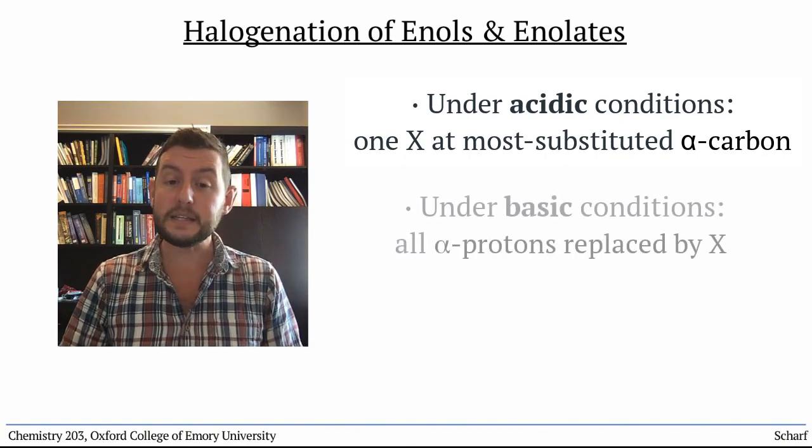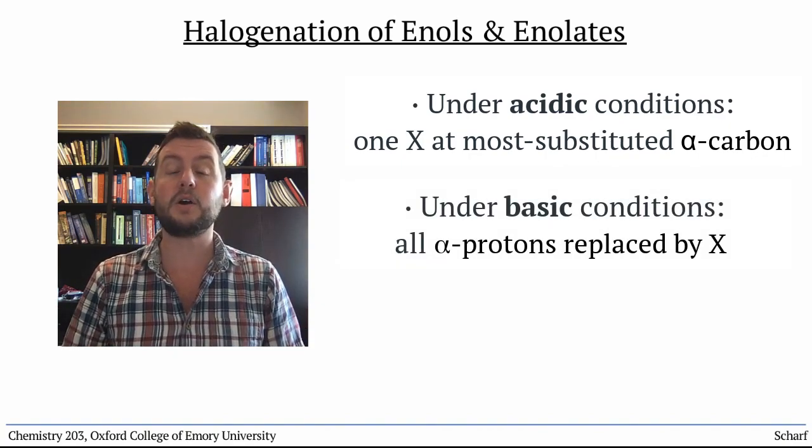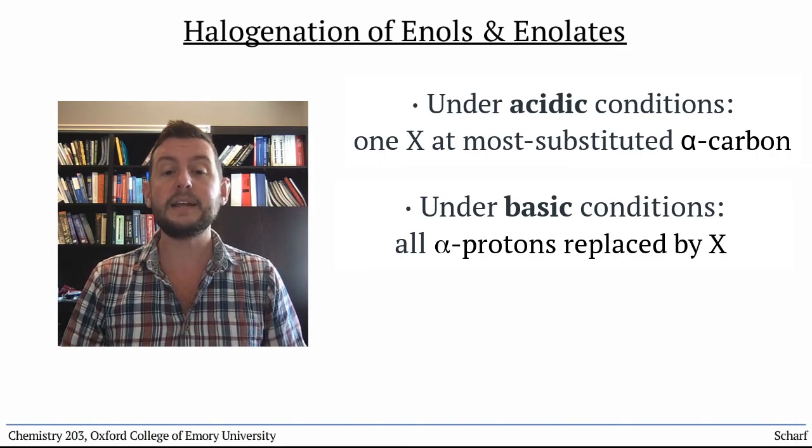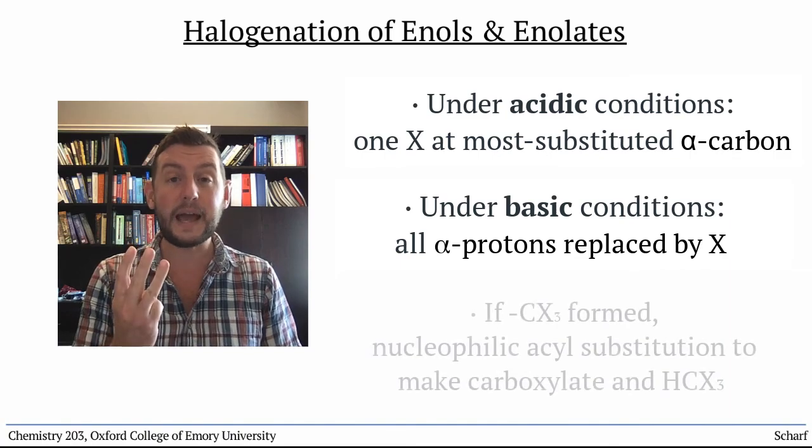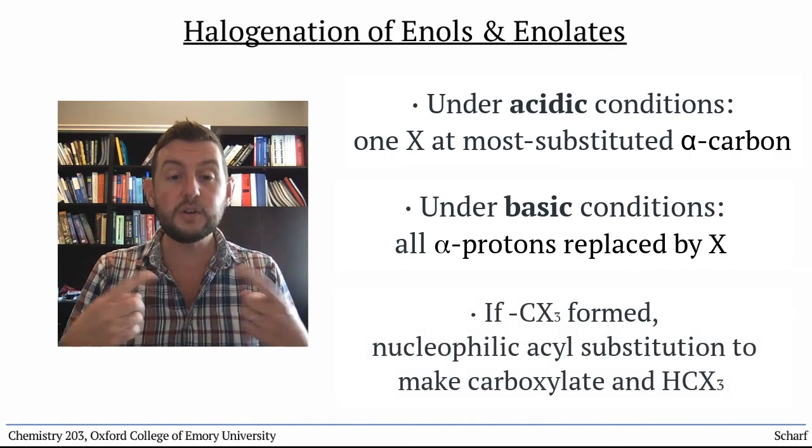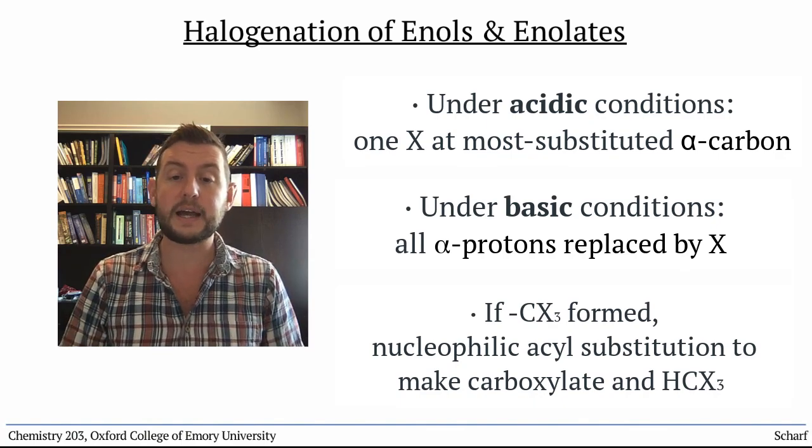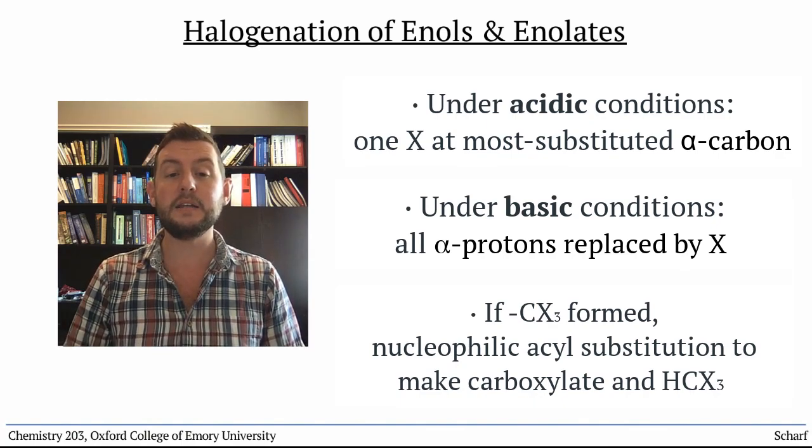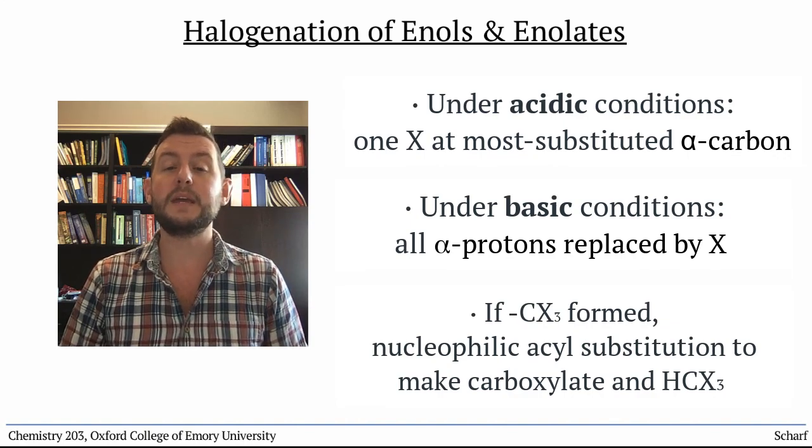Under basic conditions, all enolizable alpha protons are replaced by halogens. And in the special case of an alpha carbon that gets three halogens, nucleophilic acyl substitution takes place, making a carboxylic acid and the CX3 minus ion, which deprotonates the carboxylic acid to make a haloform.